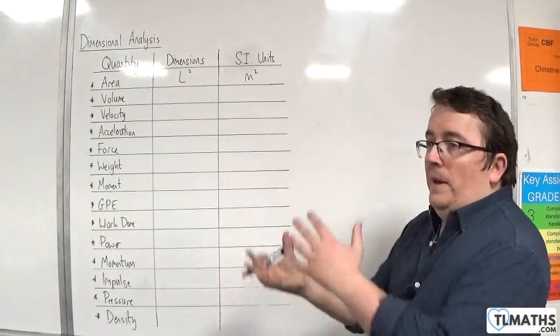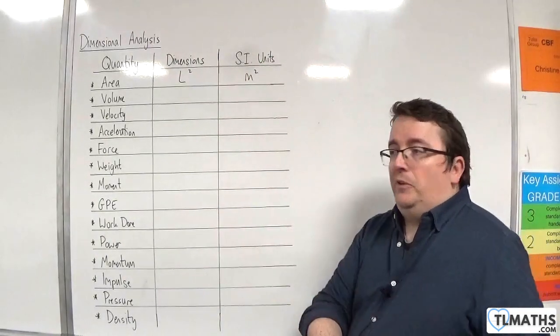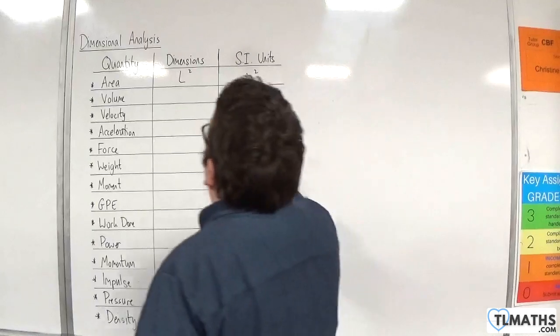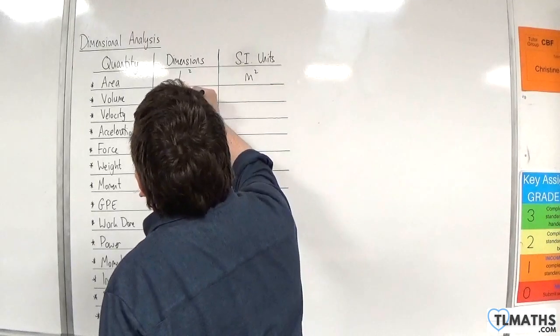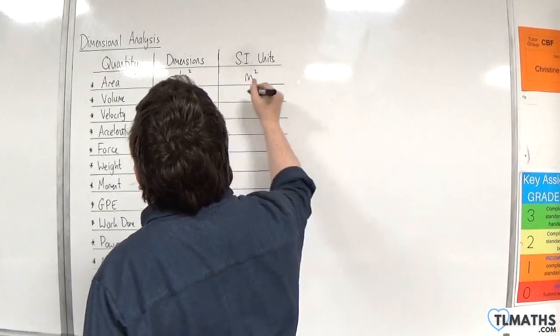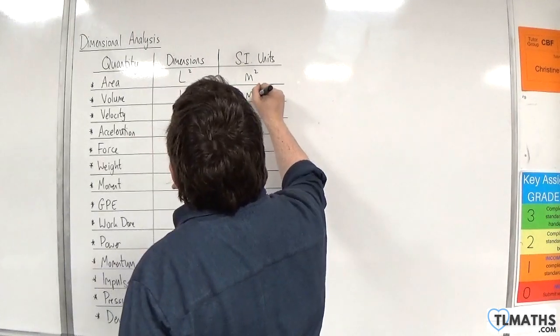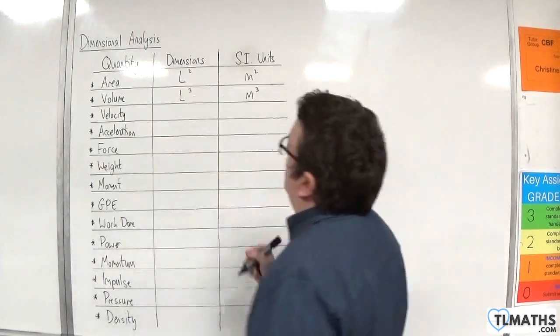Volume, of course, would be a length times a length times a length. So, L cubed. And the SI units are metres cubed.